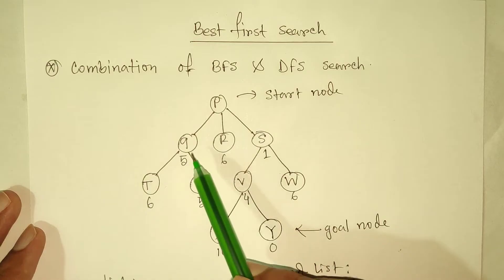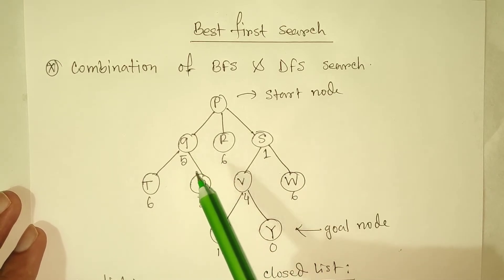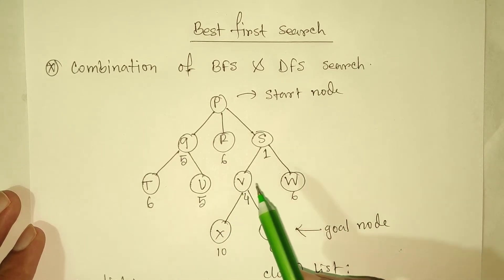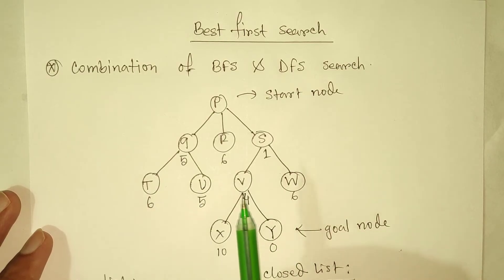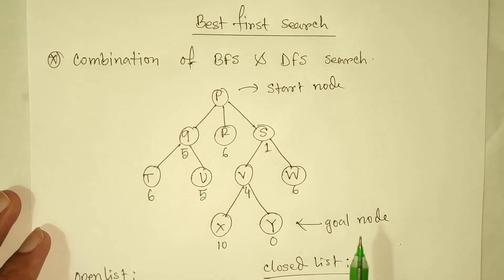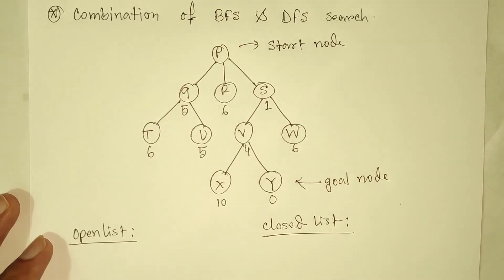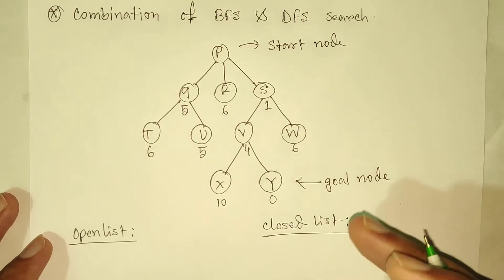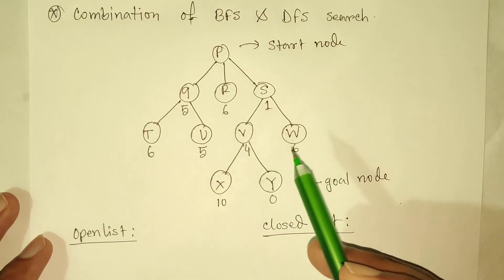I am going to show you the number of nodes. The Best First Search algorithm uses a common open list and closed list. The closed list contains nodes we have already visited, and the open list contains nodes that are yet to be visited.